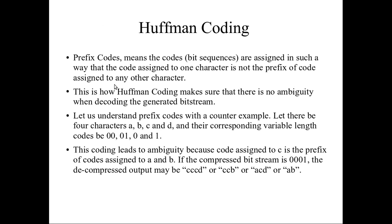Huffman coding particularly avoids the ambiguity problem during decoding of the generated bit stream. For example, if these bits are assigned to a, b, c, and d, when it is compressed and then decoded, we don't know what kind of output we will be getting. For example, in the compressed bit stream if you are getting 0, 0, 0, 1, the decompressed output may be c, c, d — taking this 0 as c and 1 as d.